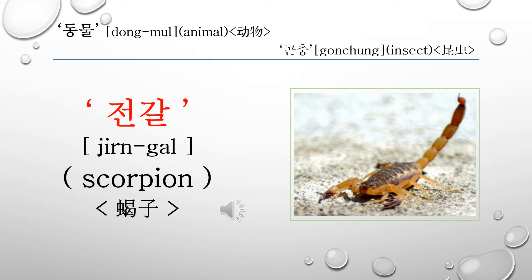Let's read it again: 전갈. 전갈 is called a scorpion in English. Let's read it again: 전갈, 전갈.